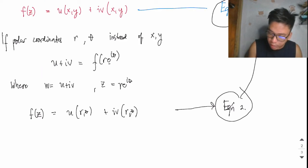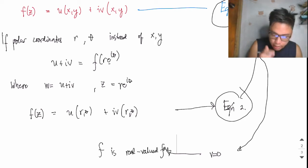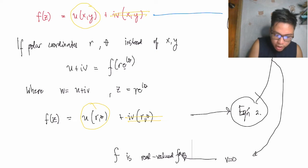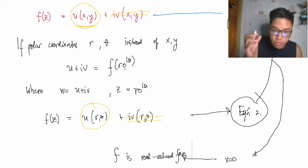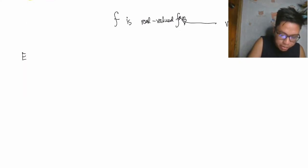What do Equation 1 and Equation 2 imply? In the event that v = 0, this tells us that f is a real-valued function — the imaginary component is eliminated, and f contains no imaginary number i. So f here is a real-valued function.